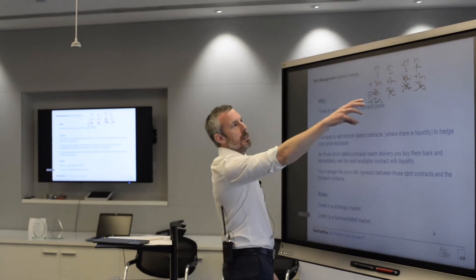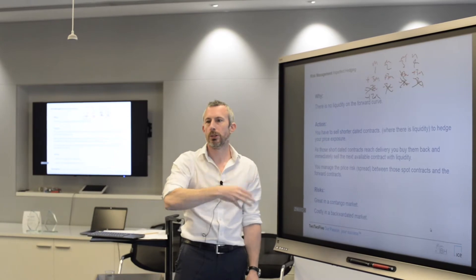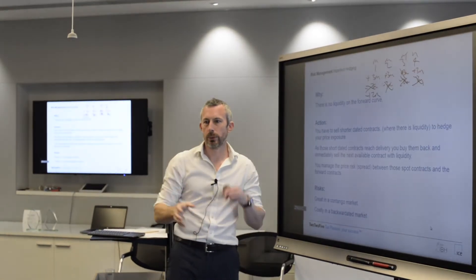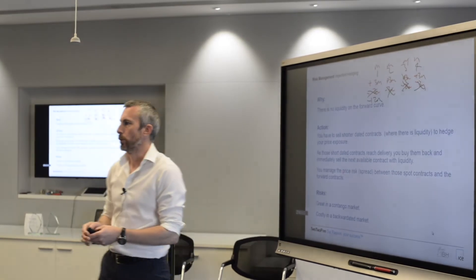In an extreme example, you might have a strip of six months of cargoes, one a month, and you might have to hedge it all in the first two months. And then you're exposed to the time spreads between the front two months and the back four months.